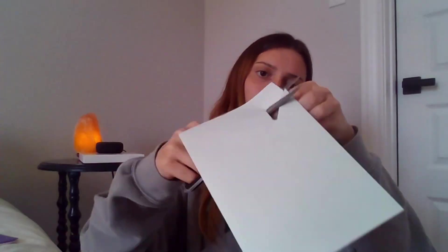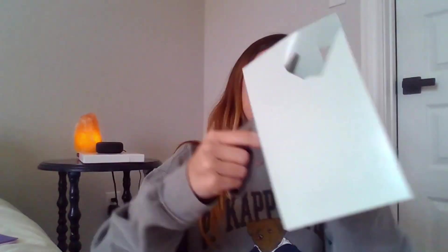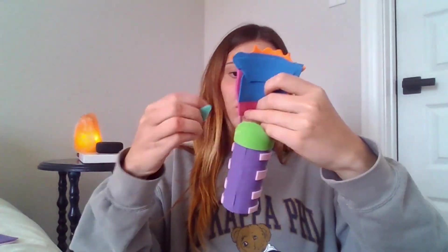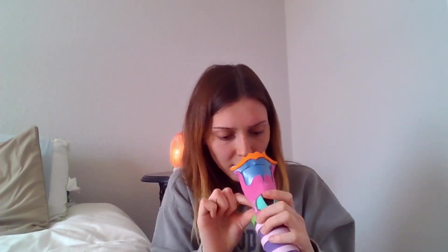In turquoise, I am creating the cricothyroid muscles. And in brown, I am creating the cricothyroid ligament, which goes in between the cricothyroid muscles.